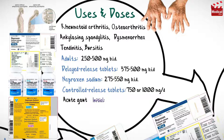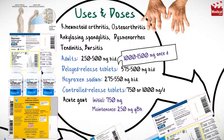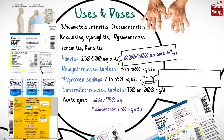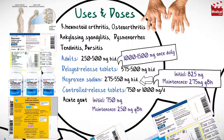For acute gout, the usual initial dose for adults is 750 milligrams, then the maintenance dose is 250 milligrams every eight hours. When using controlled release tablets, the dose is 1000 to 1500 milligrams once daily. When using naproxen sodium, the initial dose is 825 milligrams and the maintenance dose is 275 milligrams every eight hours.